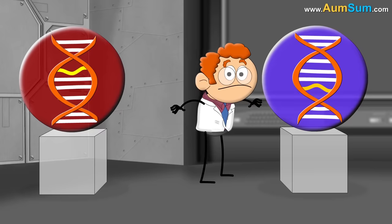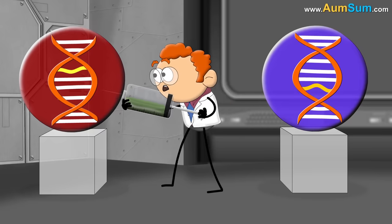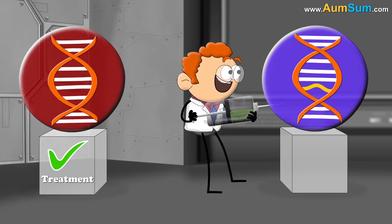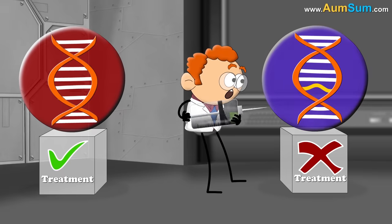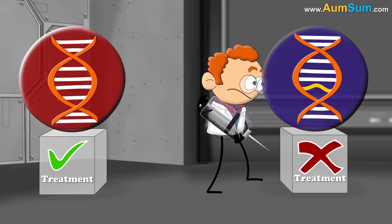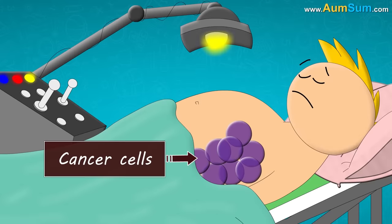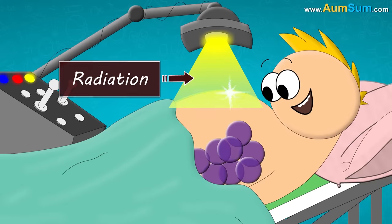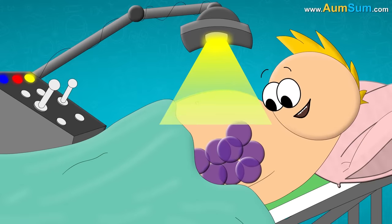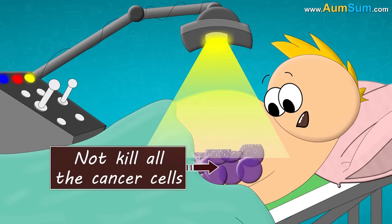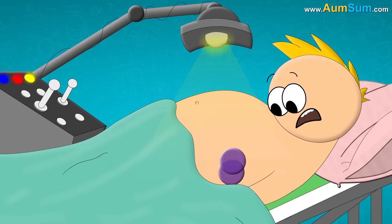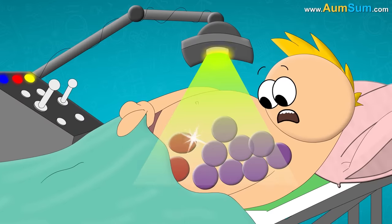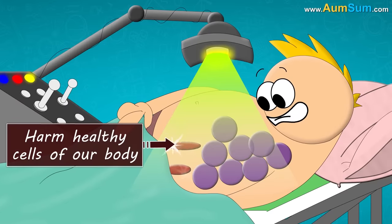Hence, it is a different disease each time, due to which a treatment which works for an individual doesn't necessarily work for the other. Now, cancer cells can be killed with treatments like chemotherapy or radiation. However, sometimes these treatments may not kill all the cancer cells, risking a cancer relapse. Moreover, such treatments even harm healthy cells of our body.